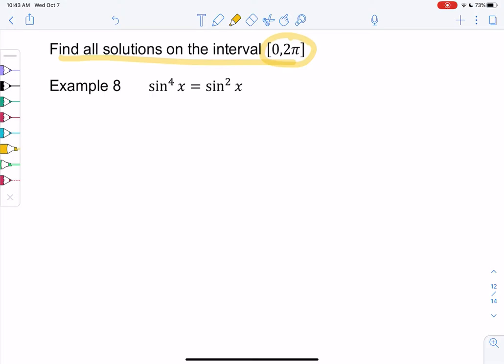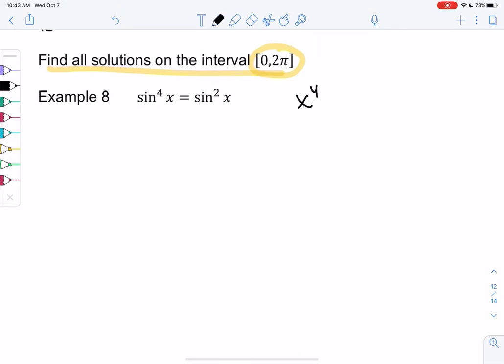It might be tempting to divide by sine squared here, but just like when we solve x to the 4th equals x squared, we would move x squared and factor instead because we don't want to lose solutions. So I'm going to move sine squared to the other side. So don't divide because you'll lose a solution. Move to the other side and factor.